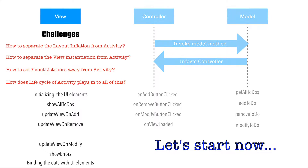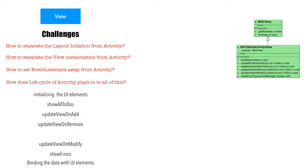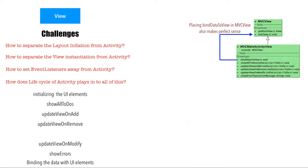To get started we will begin with an interface called MVCView. It has two methods: getRootView and initViews. Then we will create another interface called MVCMainActivityView. This interface extends MVCView, so it will inherit the methods getRootView and initViews. Other than that, it will have a few more methods like showAllToDos, updateViewOnAdd, updateViewOnRemove, updateViewOnModify, showError, and bindDataToView. Some people might prefer adding bindDataToView into MVCView to make it more generic — I'm perfectly fine with that.